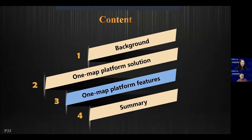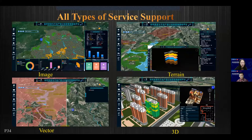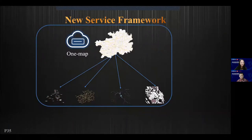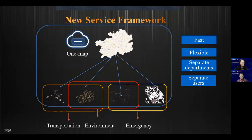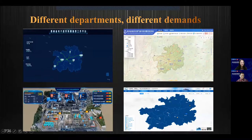Let's move to the third part: new features of the OneMap platform. OneMap has cooperated with many authorities and commercial partners to publish services for imagery, digital mapping, traffic navigation, and different kinds of data. This is a new pattern of service framework to bring faster, more flexible services for separate departments and users, with flexible mapping services provided for different authorities based on their different demands.